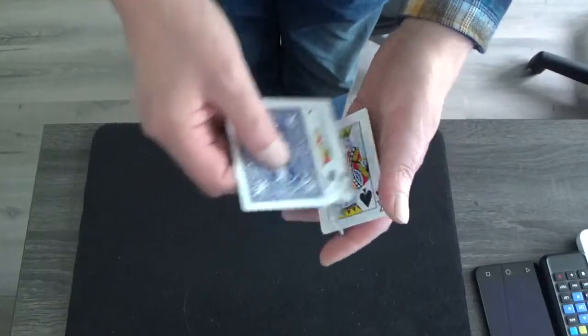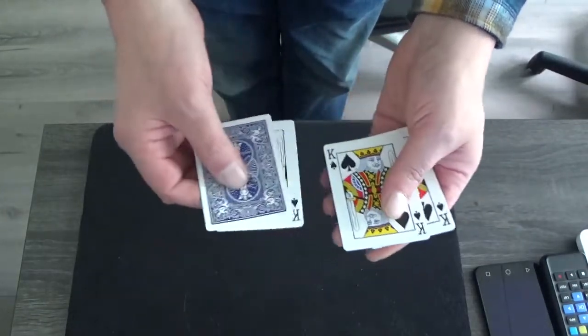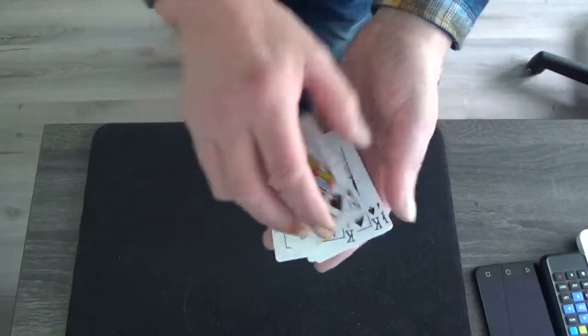You only have to say chinka chinka and you have a king, and chinka chinka and you have the other king.